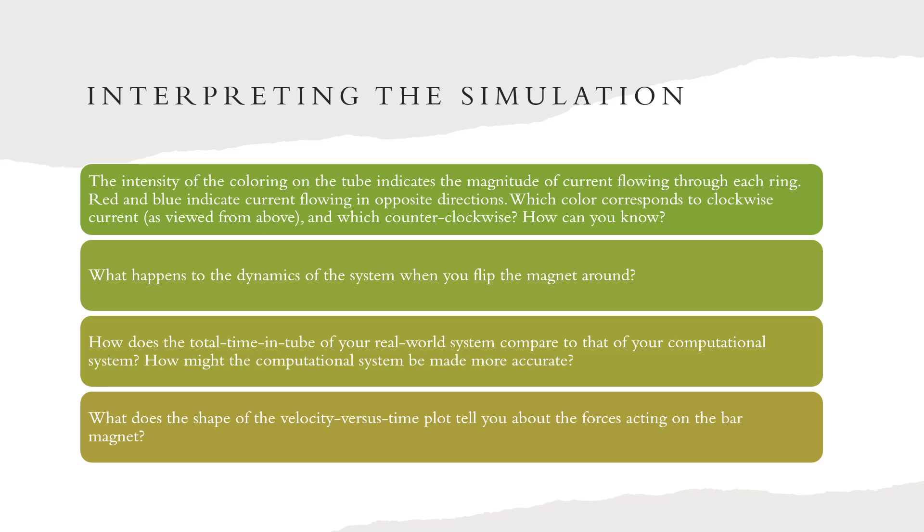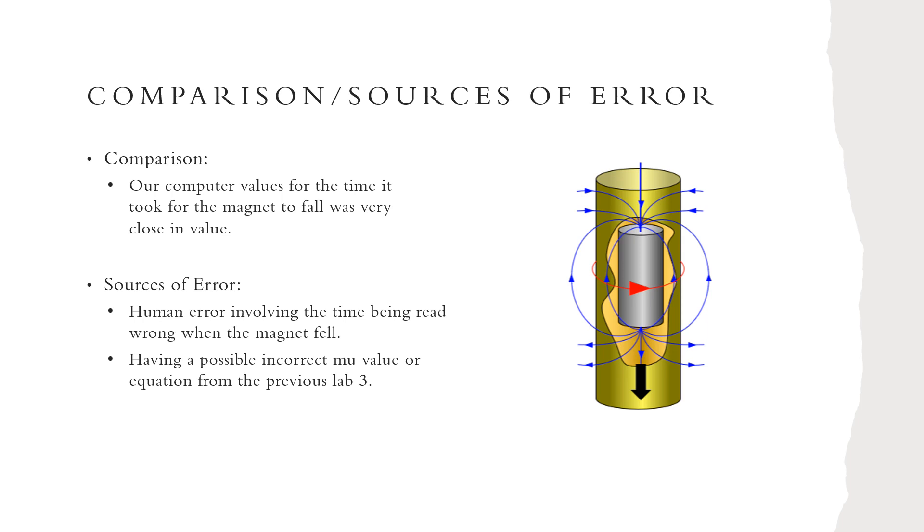What does the shape of the velocity versus time plot tell you about the forces acting on the bar magnet? This shape tells me that the gravitational force and magnetic force on the magnet are not balanced because the graph goes down and then back up. But it begins to level out after a small amount of time and they reach an equilibrium where the velocity is constant. But then the velocity is not constant again when the magnet reaches the bottom of the tube where the gravitational force is stronger than the magnetic force.